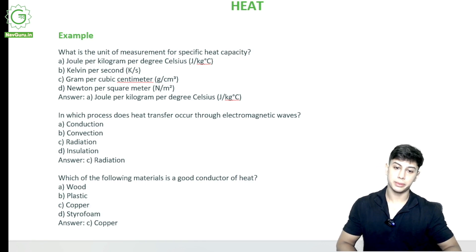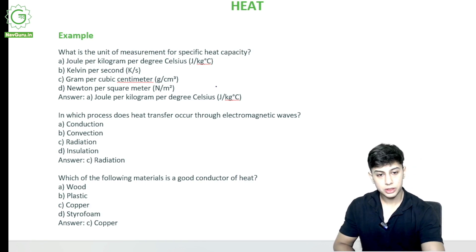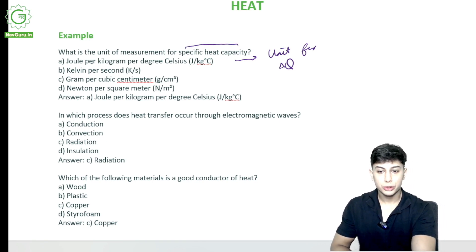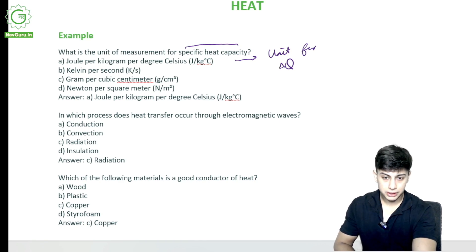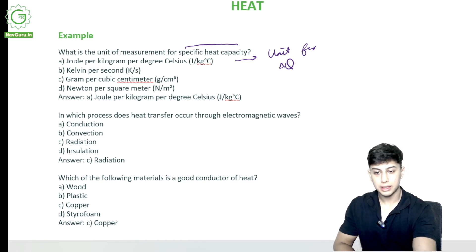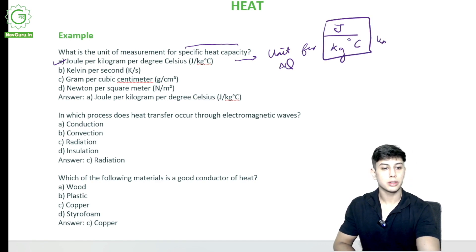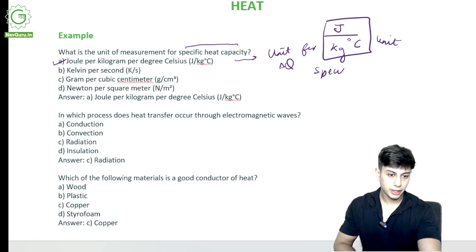What is the unit of measurement for specific heat capacity? The unit for specific heat capacity is joules per kilogram per degree Celsius. We write this as J / (kg · °C). That is the unit of specific heat capacity.